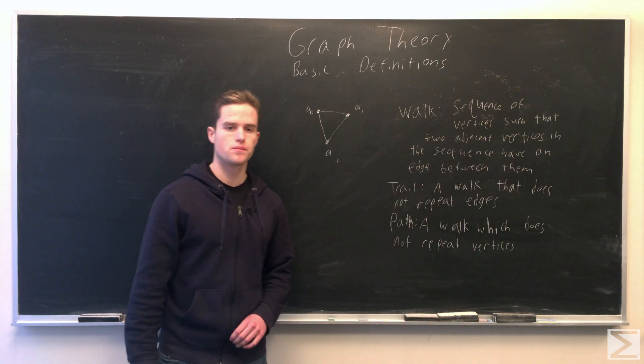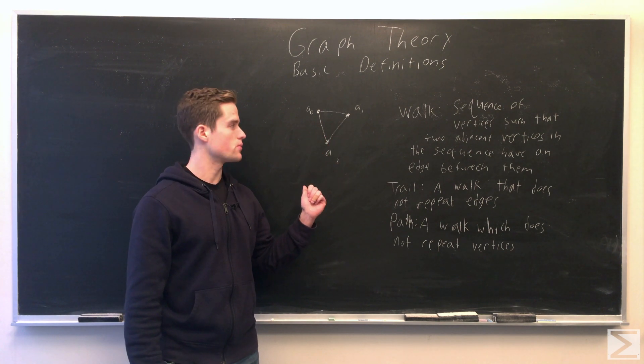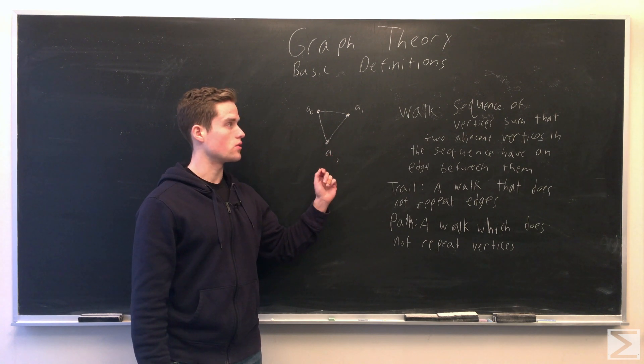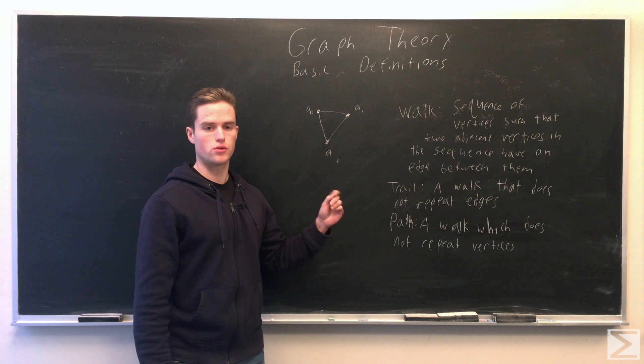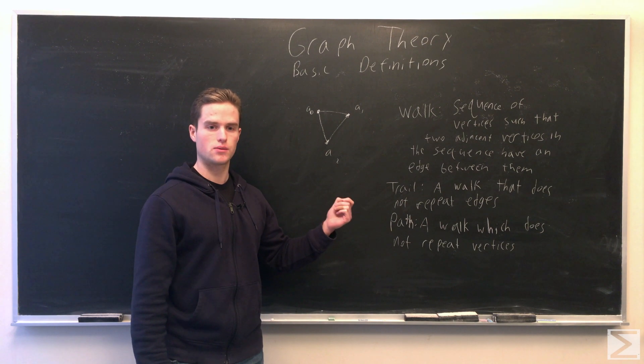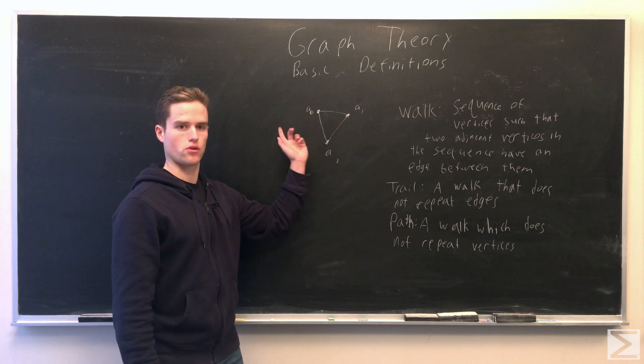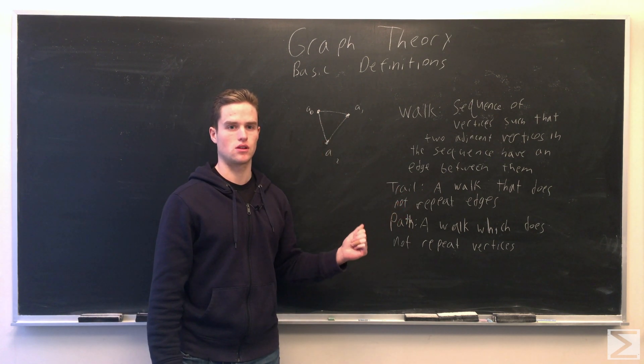We have a couple of different definitions. If we have a sequence of vertices depending on the property of these sequences, we can define them differently. So, a walk will be a sequence of vertices such that any two adjacent vertices in the sequence have an edge between them. So, we're just moving between vertices in any order we want. A trail has extra restriction, it's a walk that does not repeat any edges.